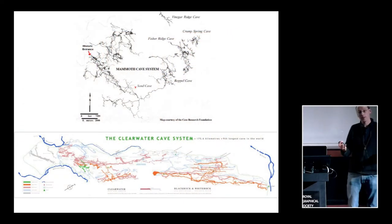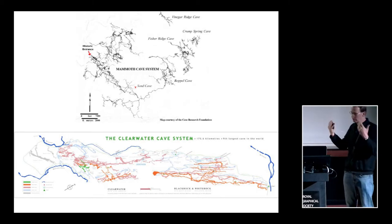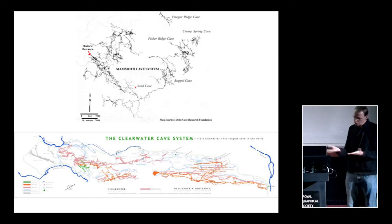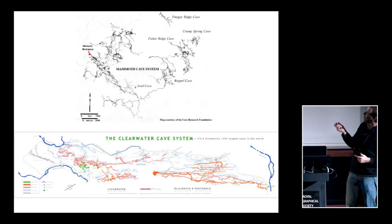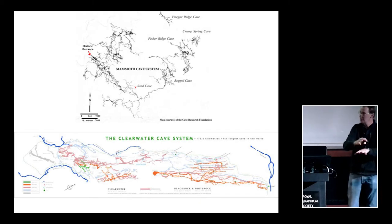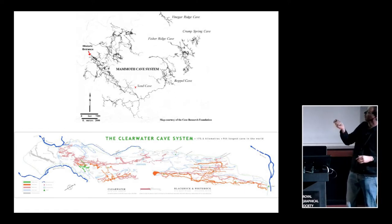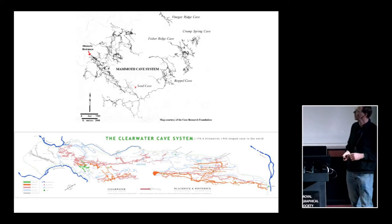But through a combination of those processes, the phreatic and vadose passages and the valley incision and new lower levels of cave passages developing and changes in inputs, that can lead to very, very complicated plan patterns of cave systems. So that's Mammoth. You've actually got multiple entrances, multiple routes through that are all interconnected and multiple levels to creating a very complex plan pattern with over 600 kilometres of cave passage.